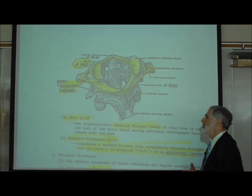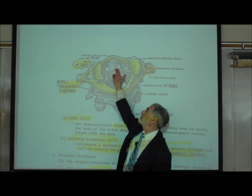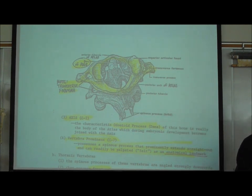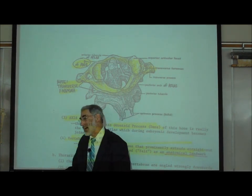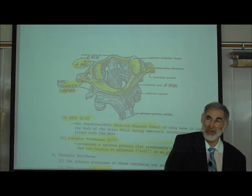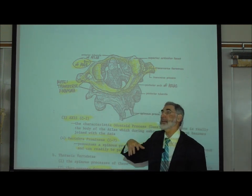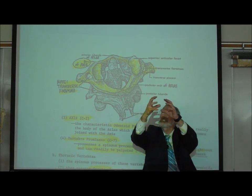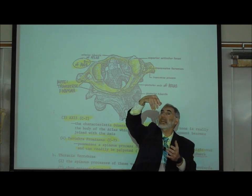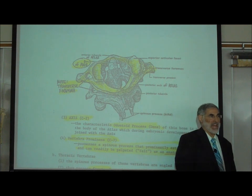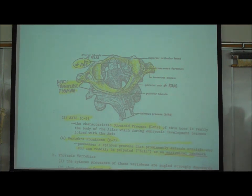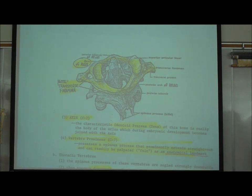The C2 or axis looks like a normal cervical vertebra except it has the extra dens. Embryologically, the body of the atlas separated and reattached to the axis below it, forming the dens — so the dens literally migrated from the body of the atlas and became the dens of the axis.